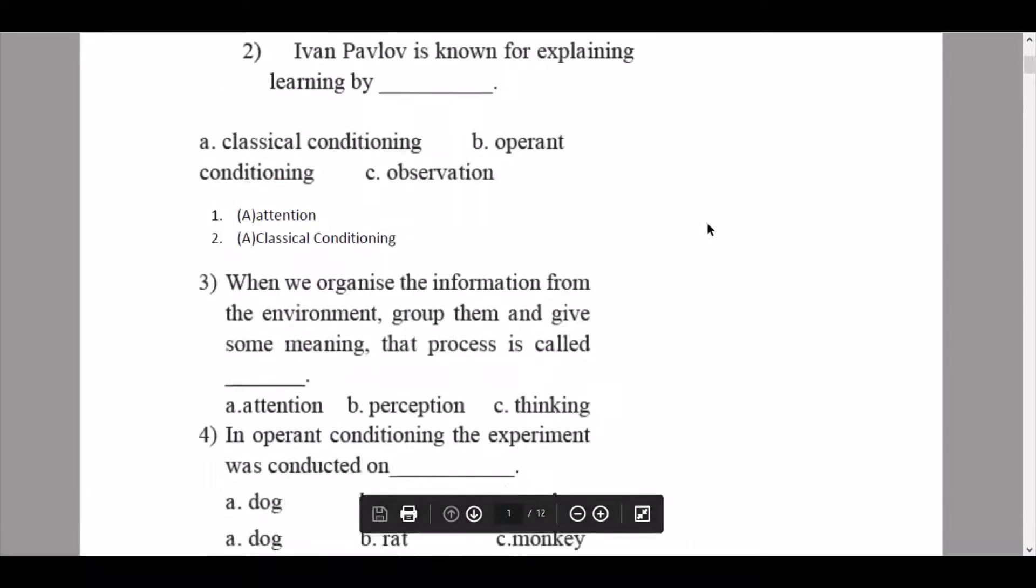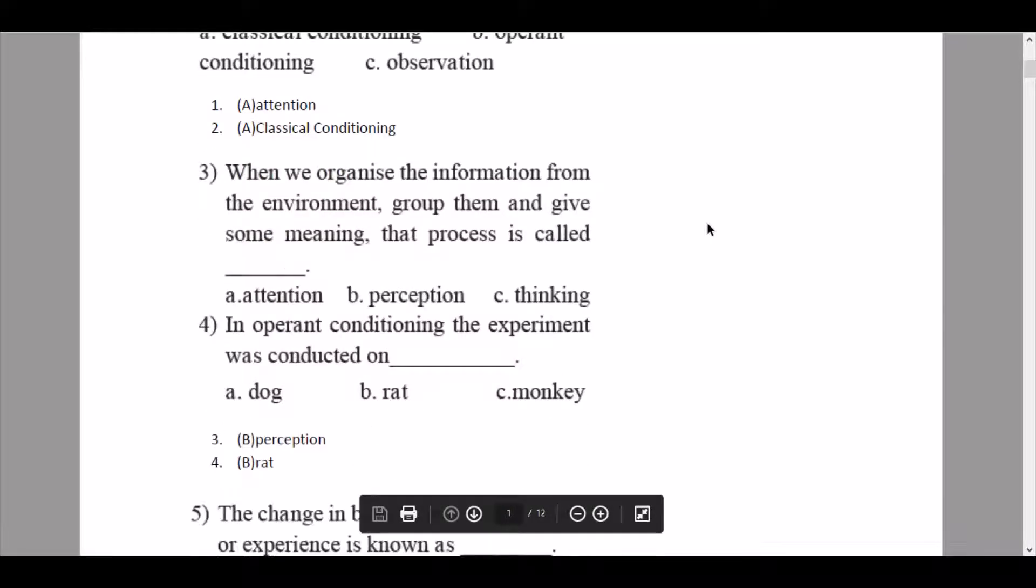So we will continue to our third question: when we organize the information from the environment, group them and give some meaning, that process is called dash. So this process is option B, perception. So the statement would be when we organize the information from the environment, group them and give some meaning, that process is called perception.